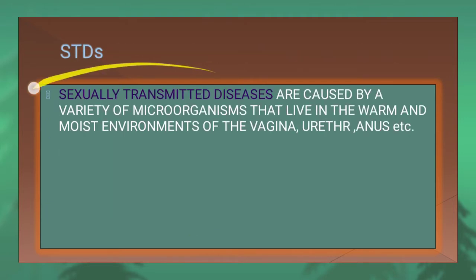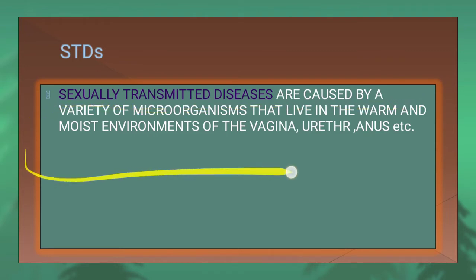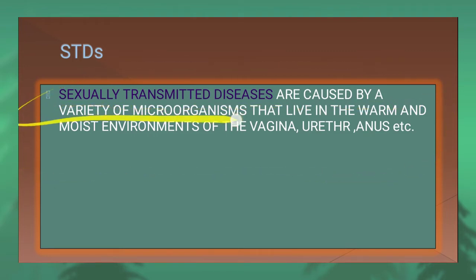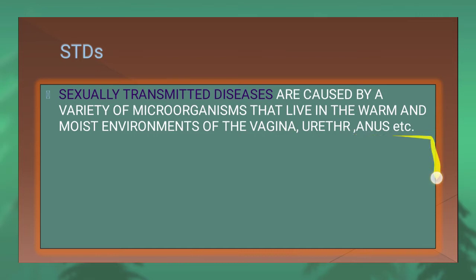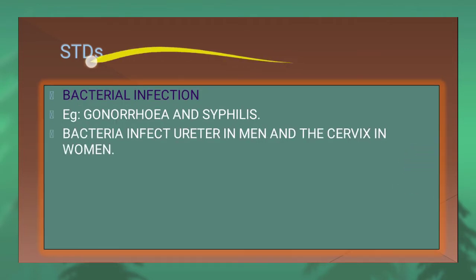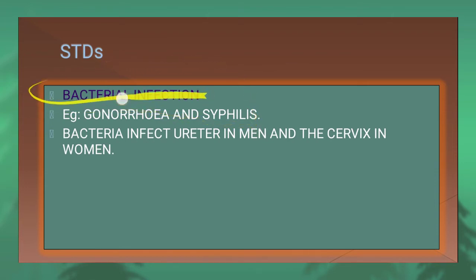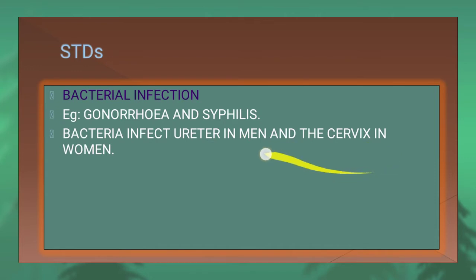Sexually transmitted diseases, also known as STDs, are caused by a variety of microorganisms that live in the warm and moist environment of the vagina, urethra, anus, etc. Examples of bacterial infections include gonorrhea and syphilis. Bacteria infects the urethra in men and cervix in women.